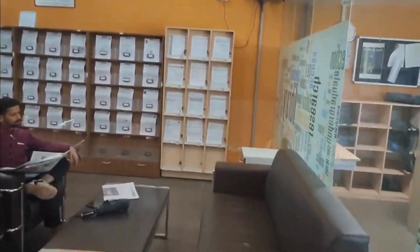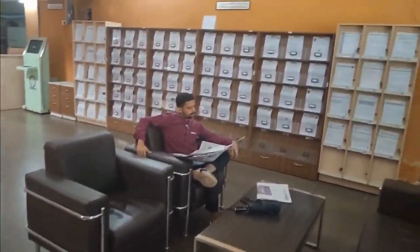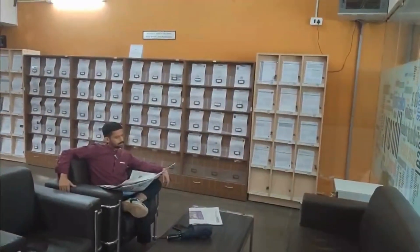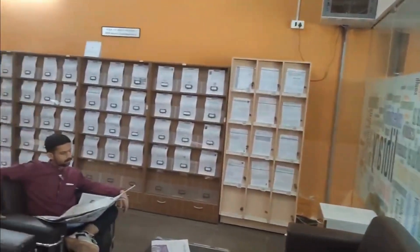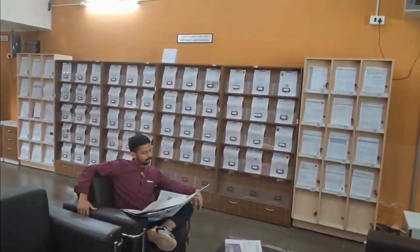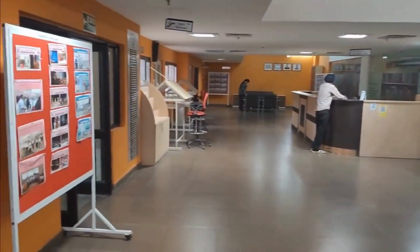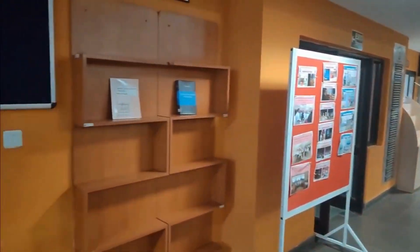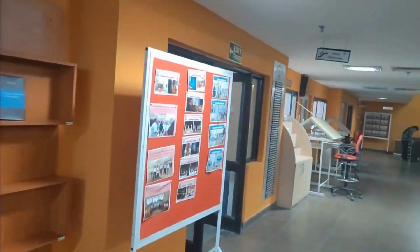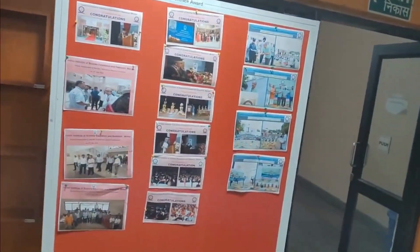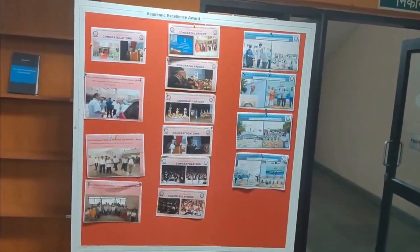These are the sofas, and those are research papers published by the professors and some students — you can take a look and even read them. This is the rack for new publications, and this is a softboard for new events happening in the college campus.